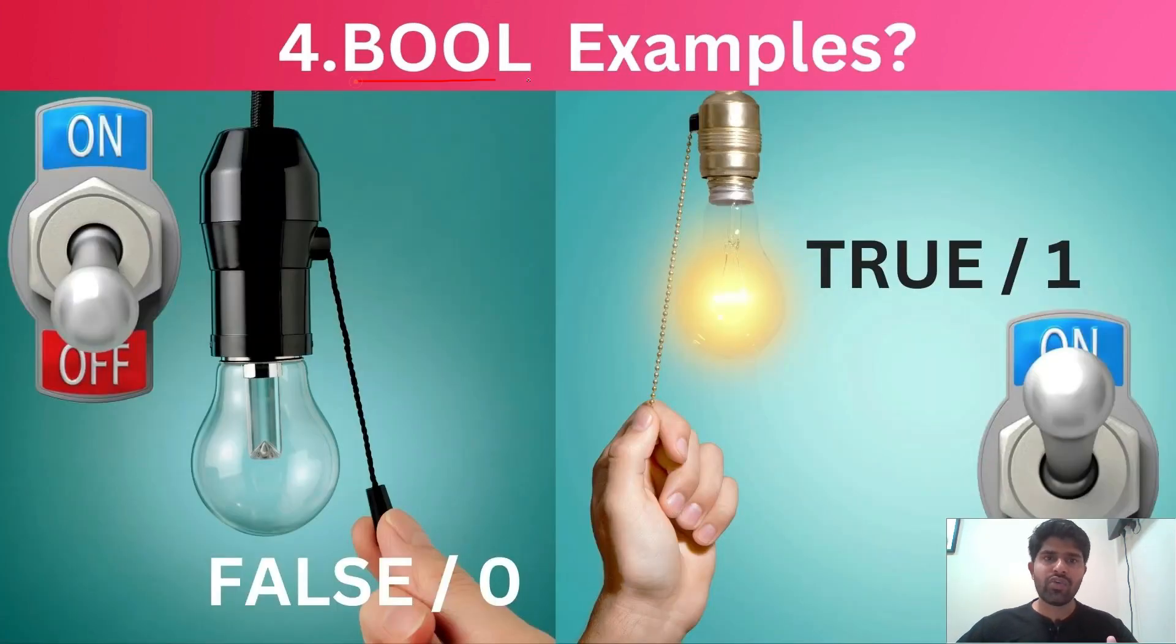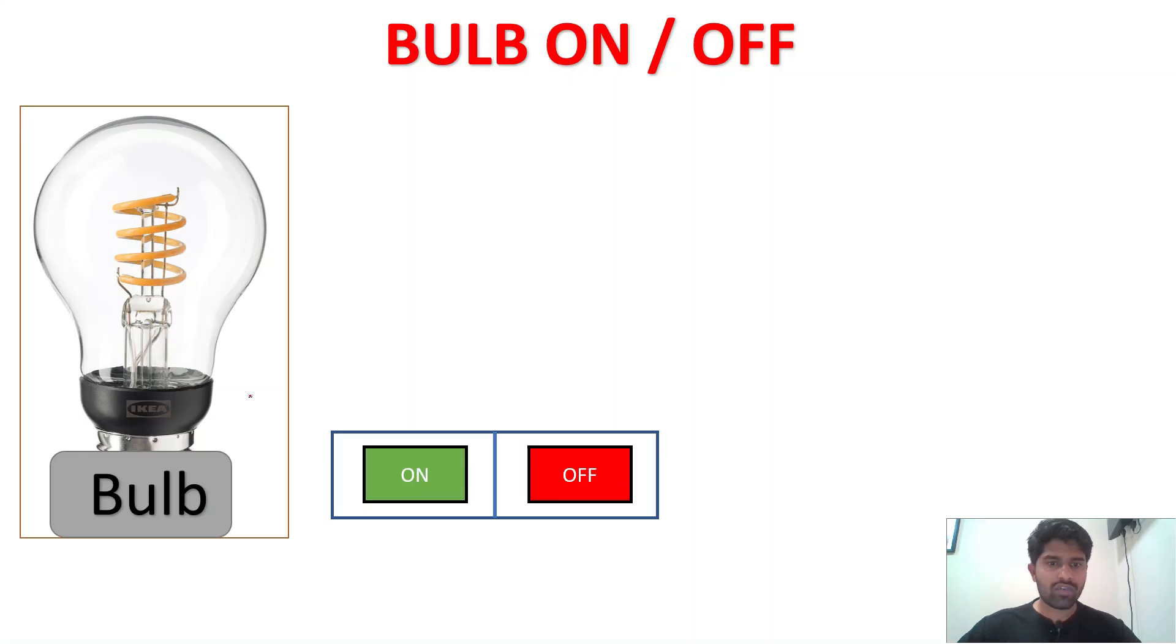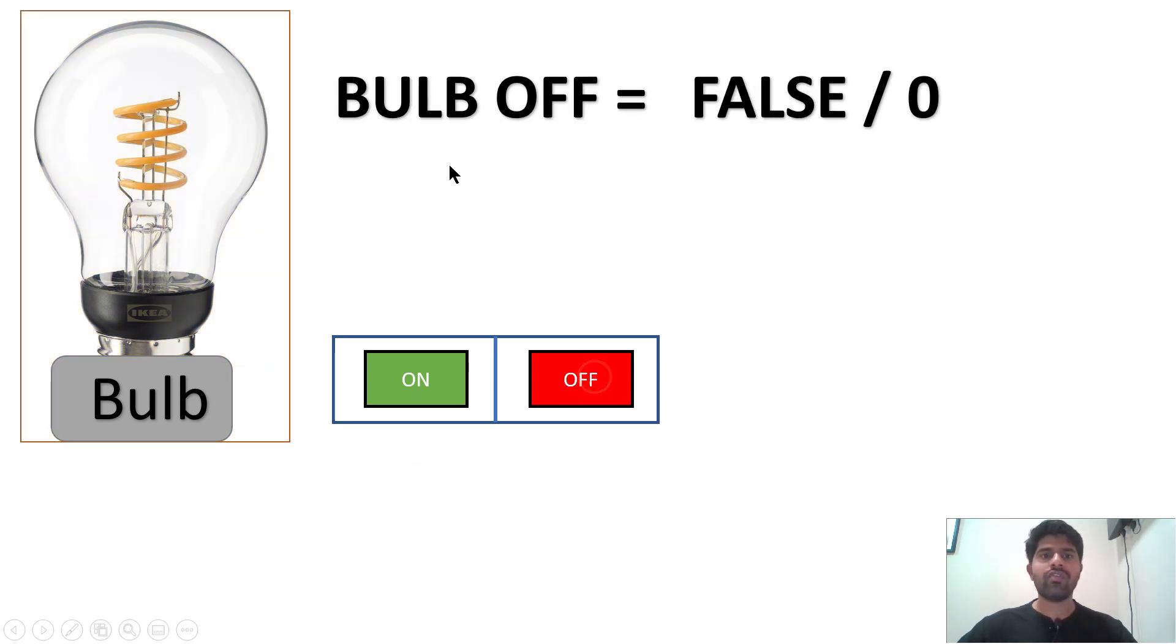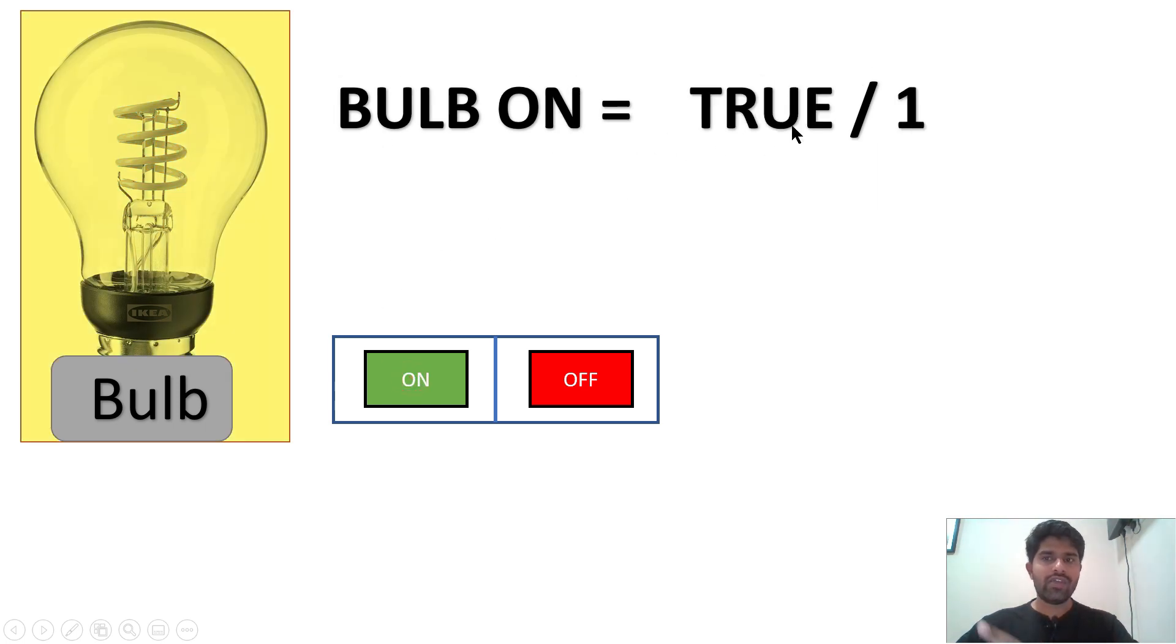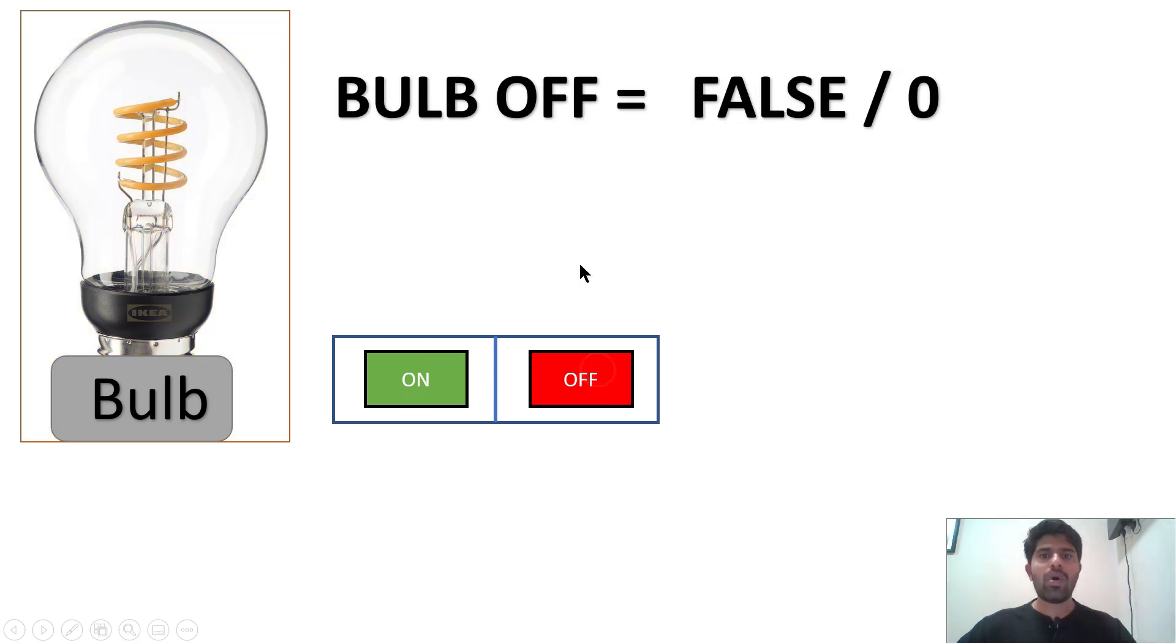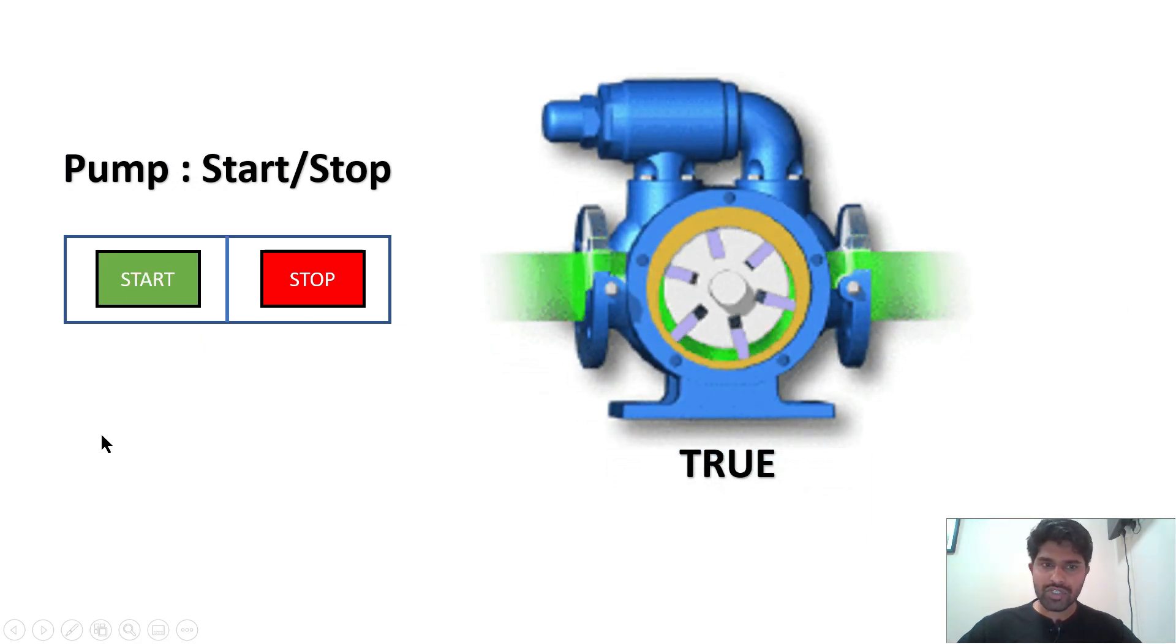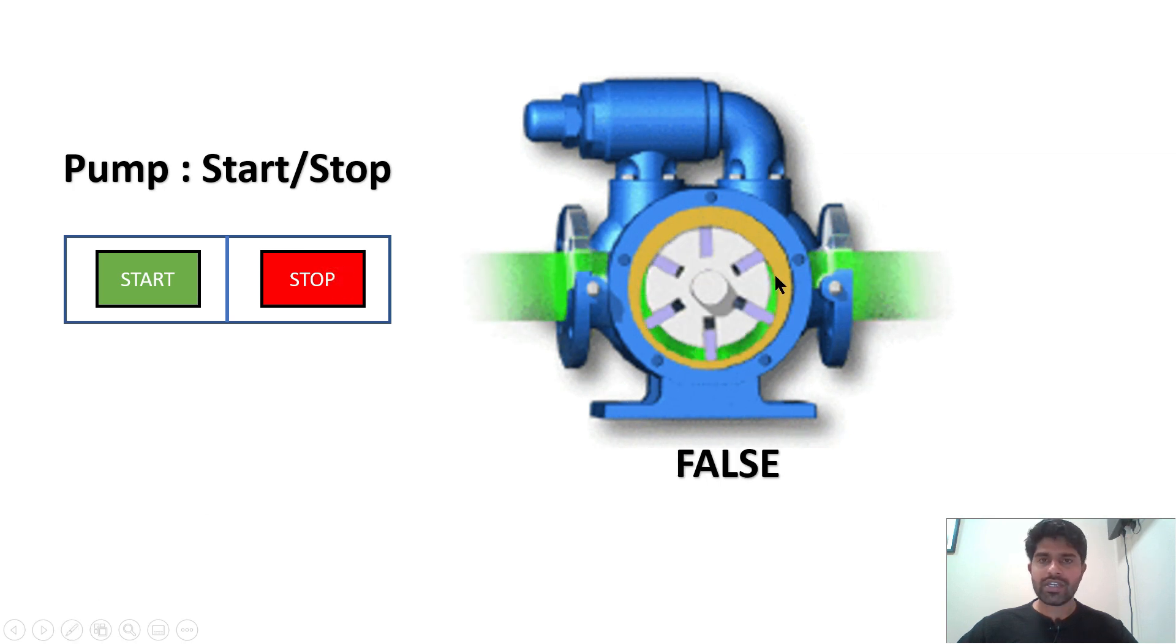So, here I will give an example about true and false just by making one bulb on off. So, I am making the bulb on. So it means that a true or value is one. If I am making the bulb off, that is the false or zero. I will show you one more time. Bulb on. It is a true value or one. Bulb off. It is a false or zero. This is very simple example. I am starting the pump. So, it is turning. The value is true and stopping the pump. It is stopping. The value is false. So, this is very simple Boolean.